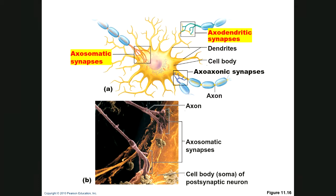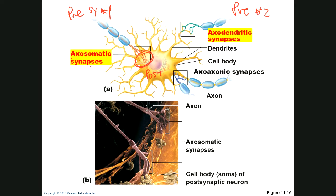A neuron can be synapsed by several axons from other neurons. When a presynaptic neuron synapses at the body of the postsynaptic neuron, that is an axosomatic synapse. When it synapses at the dendrite, that is an axodendritic synapse. Most synapses come from the axon of the presynaptic neuron into the body or dendrites of the postsynaptic neuron.